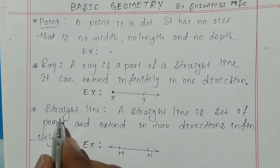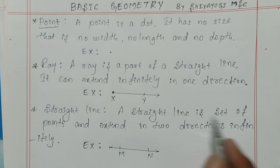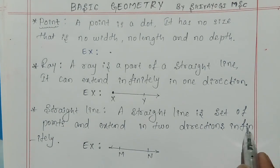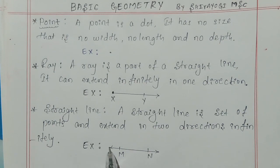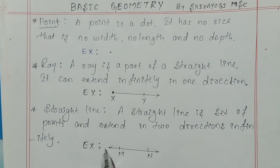Next I will explain straight line. A straight line is a set of points and extends in two directions infinitely. This is the straight line, and it contains a set of points. It can be extended infinitely in two directions — in this direction and also in this direction.